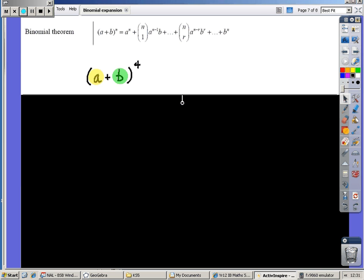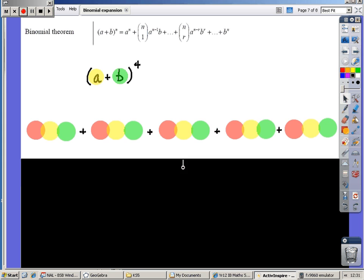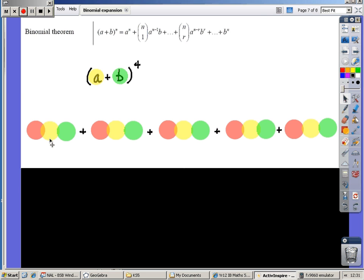Our binomial expansion generally has two elements, an A and a B. They could be anything - they could be x's, y's, numbers, a combination of those, and a power. In this case a power of 4 is what we want. Now, if we expand this, we will get different elements to the expansion. It's important to realize that the expansion will contain expressions, each of which has three elements.